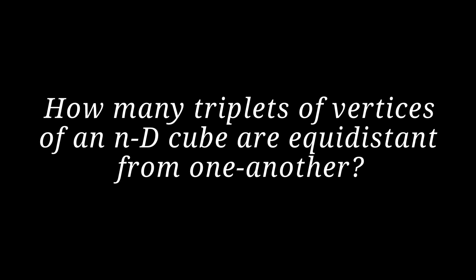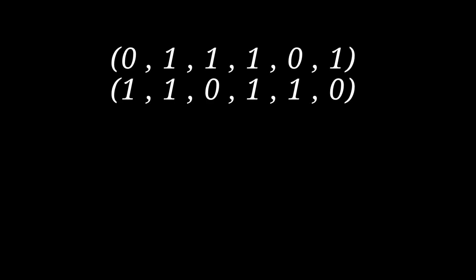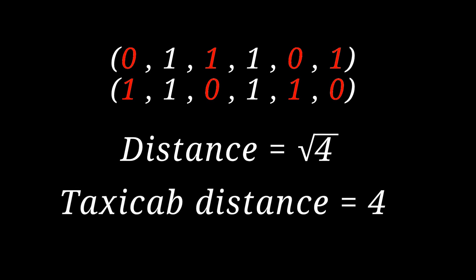And that brings us to distance. If we want to find the distance between these two points, we simply take the square root of the number of places where the coordinates of these two points differ. But don't you agree when I say that the square root part seems pretty unnecessary? So we can skip taking the square root and just look at the number of places where the coordinates of any two points differ. This is also called the taxicab distance, and henceforth when I say distance, this is what I'll be referring to.